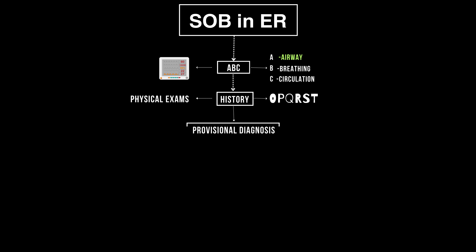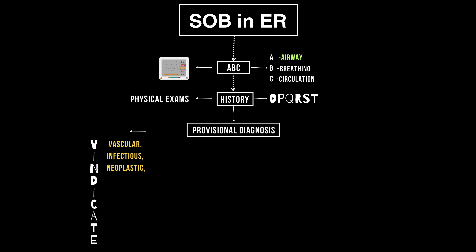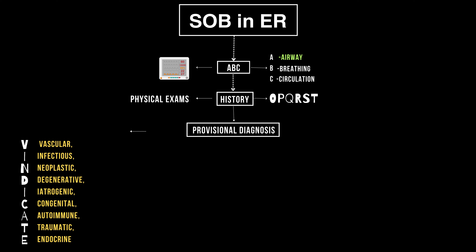Now, based on the clues, we have to reach a provisional diagnosis to take initial steps. Think about the VINDICATE mnemonic: vascular, infectious, neoplastic, degenerative, iatrogenic, congenital, autoimmune, traumatic, and endocrine. Here are some key ones.